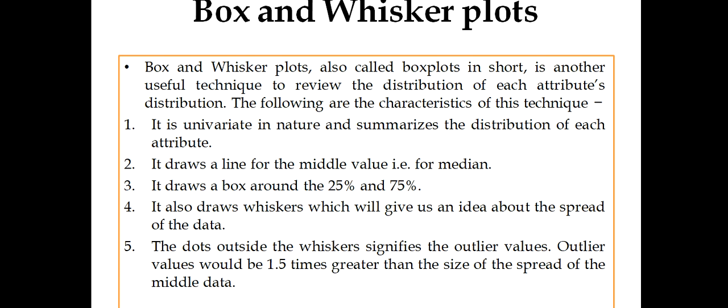That whiskers, with respect to that whiskers, this is known as box and whisker plot. We are using box and whisker to have an analysis of the distributions of attributes. The dots outside the whisker signifies the outlier values. And outlier values would be 1.5 times greater than the size of the spread of the middle data. You can imagine how important this box and whisker plot is. It also helps us to find out outliers in our dataset.